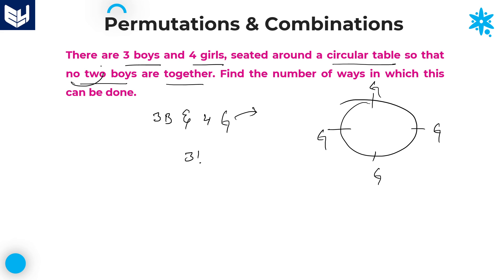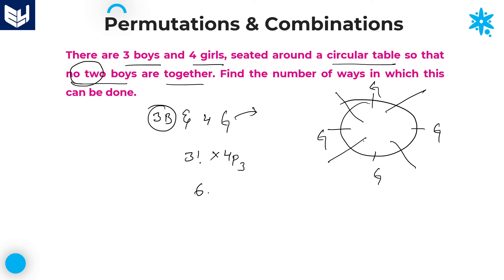Once that is done, according to the question, no two boys are together, which means boys must be seated between the girls. Between the girls, how many places are left over? We have four places. We need to arrange only three boys out of four places. Arranging three boys out of four places happens in 4P3 ways. The required answer is 3 factorial into 4P3. 3 factorial is 6, and 4P3 equals 24. 6 into 24 equals 144 ways. That is the required answer for this question.